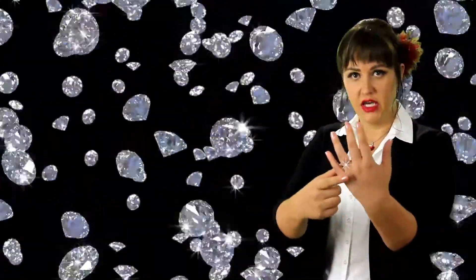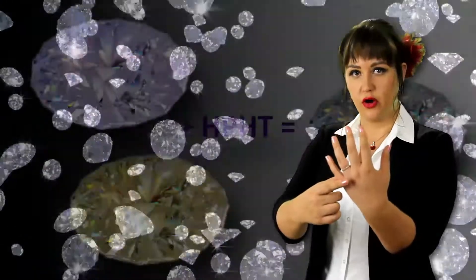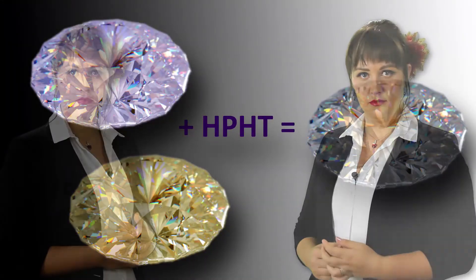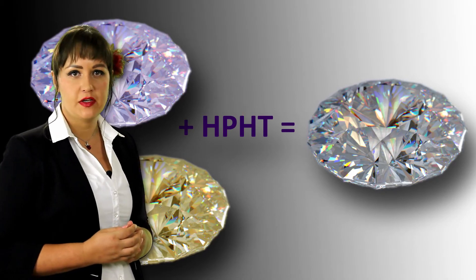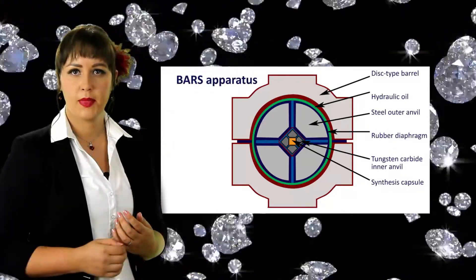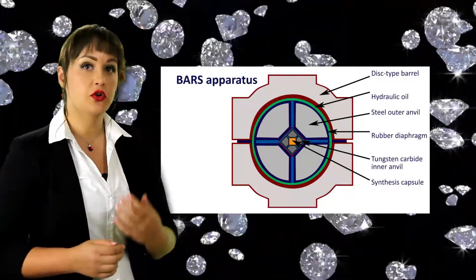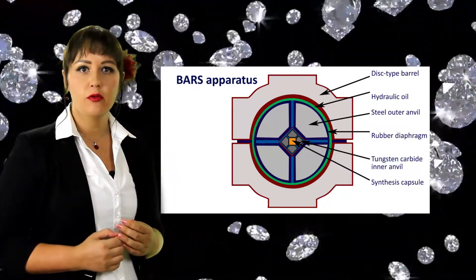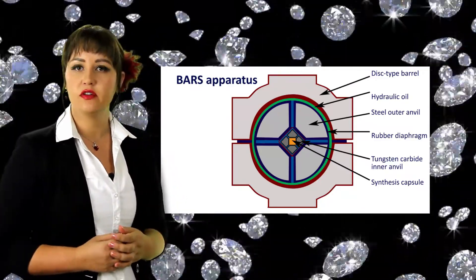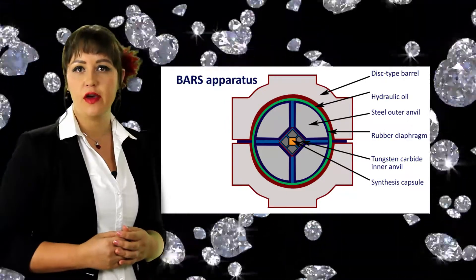The high-pressure, high-temperature process is mainly used when working with synthetic diamonds; however, it is now also used on natural diamonds to enhance or adjust their color properties. Presses of different designs can be used in the process. Cubic-type presses are the most expensive and complicated, and are mainly used for enhancing or changing colors in natural diamonds. The growth within the capsule of the press is about 0.5 carats of rough diamond per day.